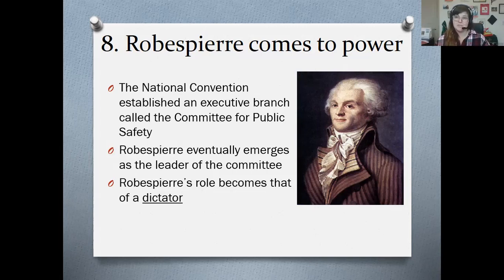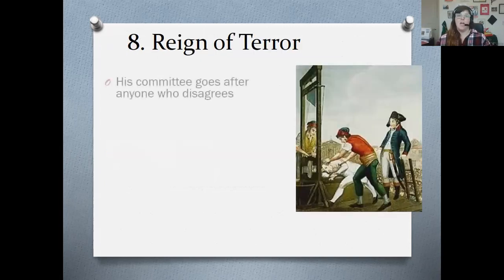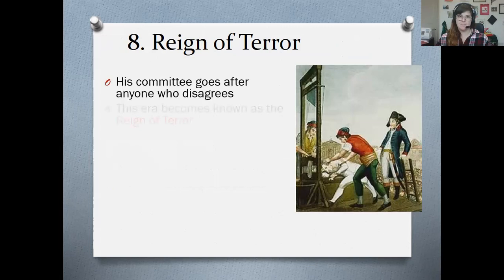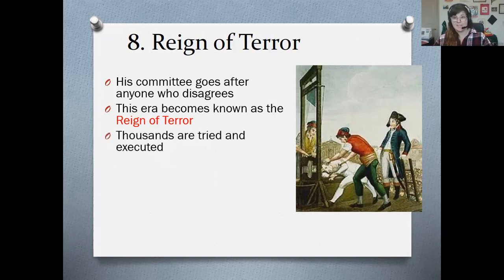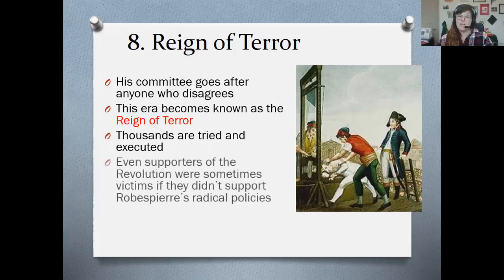At this point, Robespierre institutes something called the Reign of Terror. His committee — the Committee of Public Safety — goes after anyone who disagrees with the revolution, and not just the revolution, but their version of the revolution. This era becomes known as the Reign of Terror because essentially their solution to anyone who disagrees is to execute them, primarily using the guillotine. Thousands of people are tried and executed during this roughly one-year period — possibly up to 40,000 or 50,000 people executed by guillotine. Even supporters of the revolution were victims if they didn't support Robespierre's particular policies. People who had been part of the Tennis Court Oath and instrumental in the convention and the Legislative Assembly were in fact executed by the Committee of Public Safety.